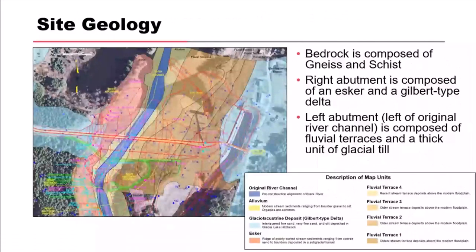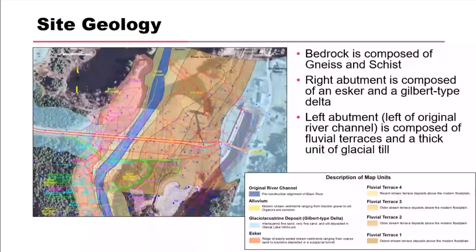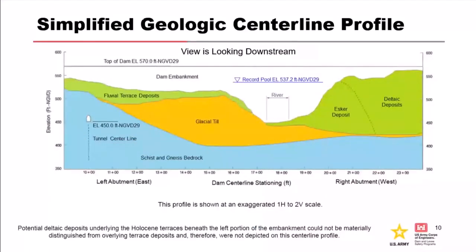The bedrock is composed of gneiss and schist. The right abutment is composed of an esker and Gilbert-type delta sequence — here's the esker and the delta coming in from drainage this way. The left abutment is composed of fluvial terraces — terrace four, three, two, and one — illustrating how the glacial lake was dropping and creating those terrace surfaces over time. You can start to see a pretty complex geomorphological picture with an esker that's highly permeable and fine sands over here.